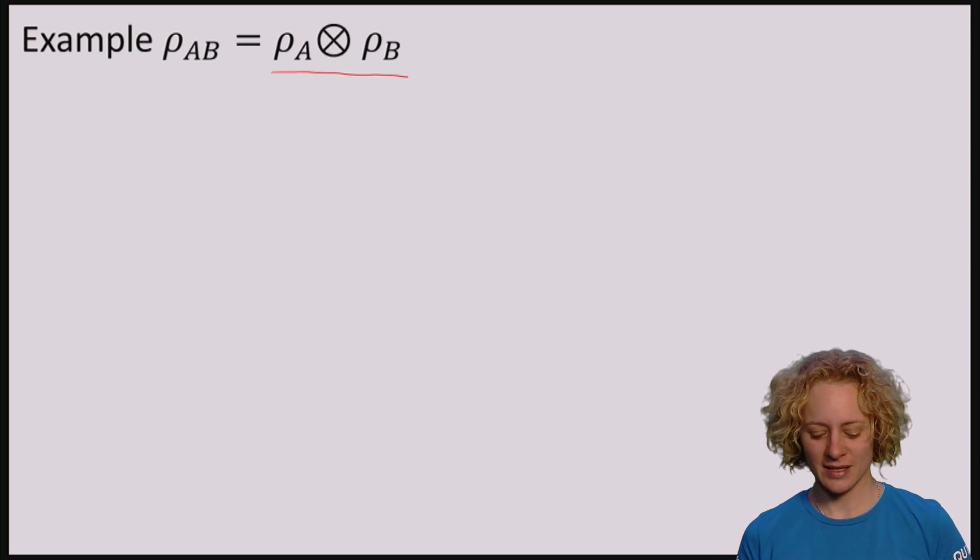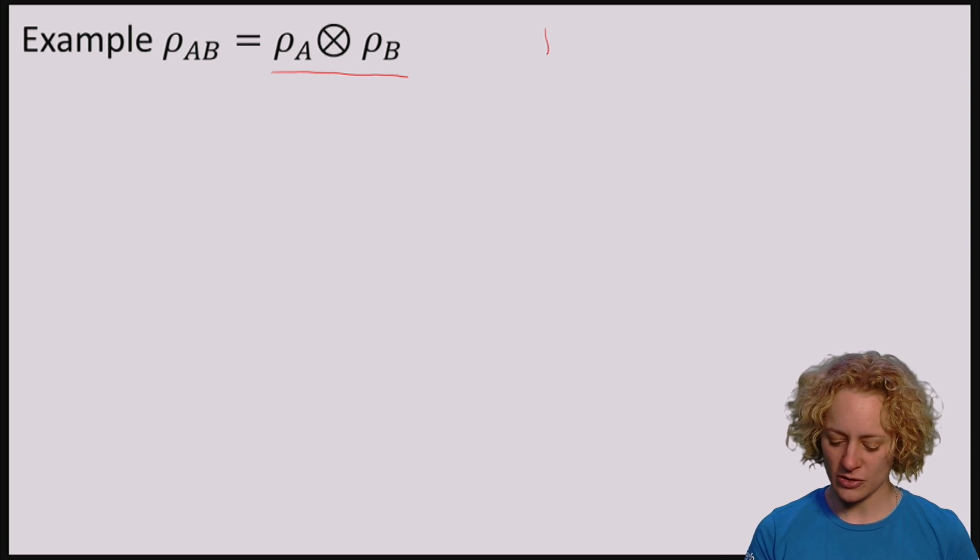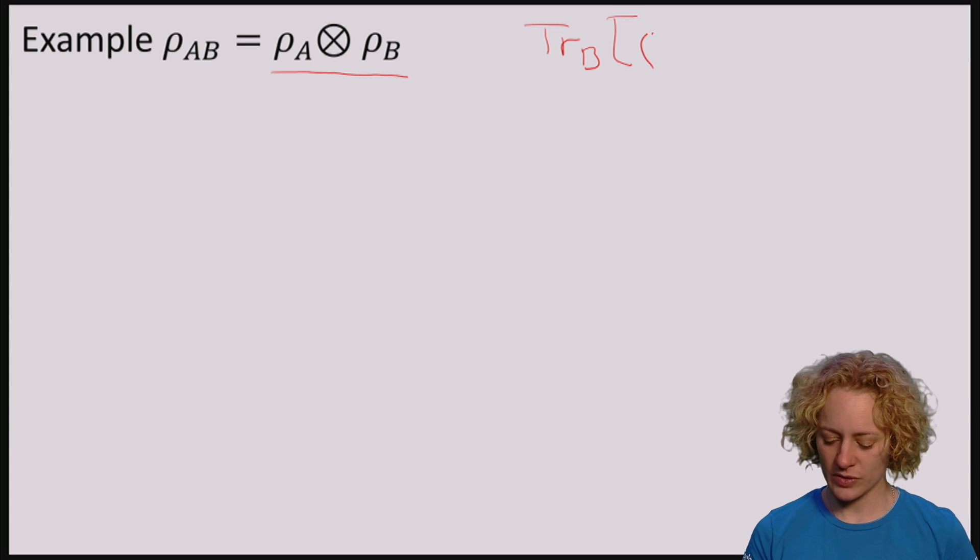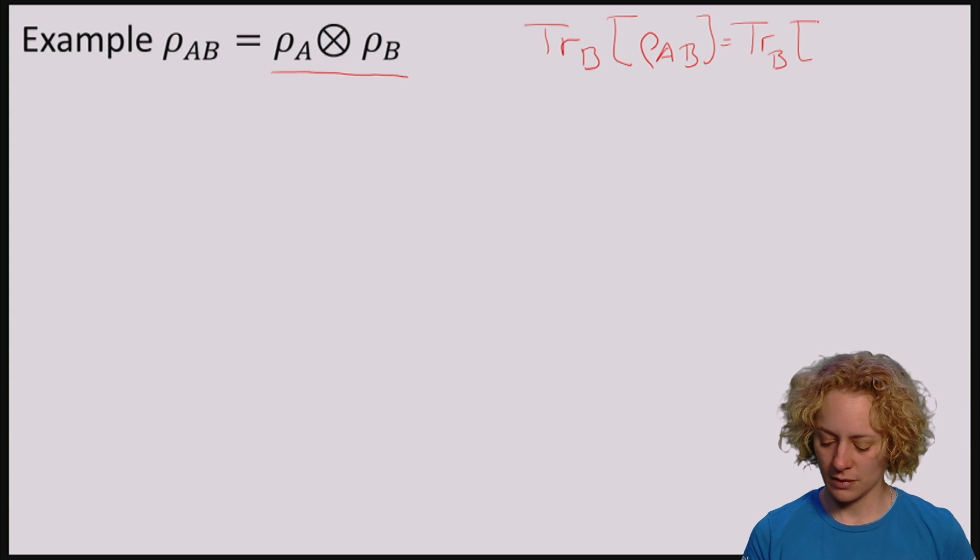And to be consistent, namely that applying the partial trace over B of something that is actually a tensor product, so in fact it looks like this. We expect to get back ρ_A and nothing else.